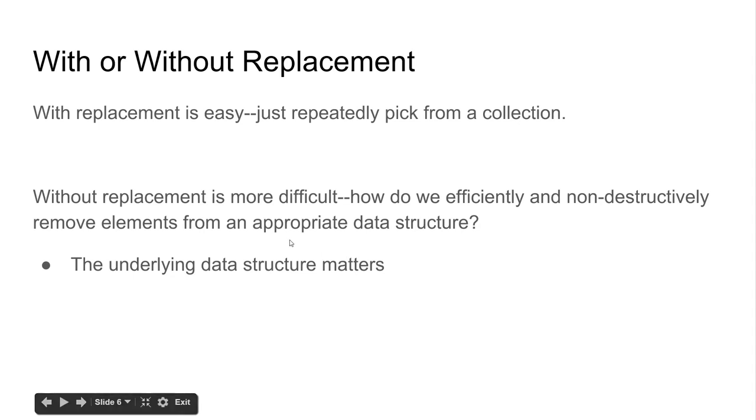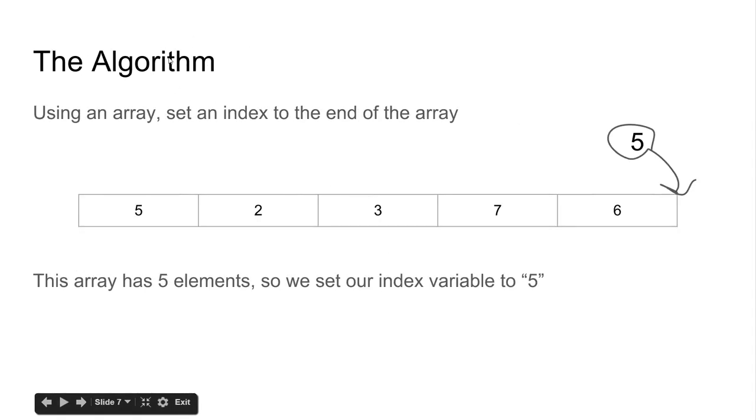But it turns out I came across this algorithm to actually do this, to pick things from an array without replacement and do it in a really performant way, and it's actually really easy to implement. And that's kind of the basis of this video. So the algorithm is, you use an array, and you set the index to the end of the array. So, in this case, we have an array with five elements, and our index here, I have a variable named max I think whenever I write this. But we set our index variable to five, because there's five elements in the array. We want it to be pointing to the end of the array here.